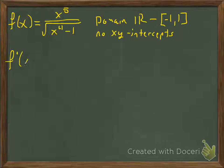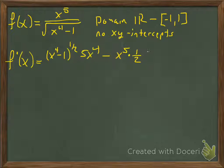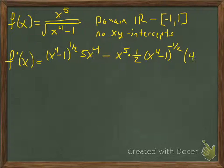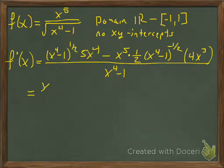The first thing we're going to do is take the derivative using the quotient rule. So it's the low function — we'll write it with the one-half exponent — times d-high, minus the high function times the derivative of the bottom, which will be one-half times x to the fourth minus one to the negative one-half. Then by the chain rule, we'll have 4x cubed. All over the denominator squared, which will be x to the fourth minus one to the first power.